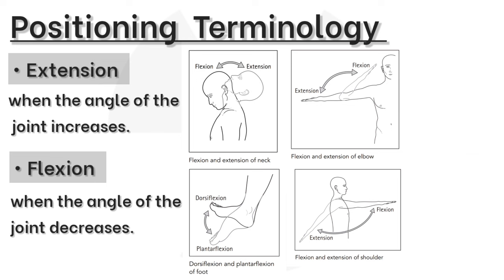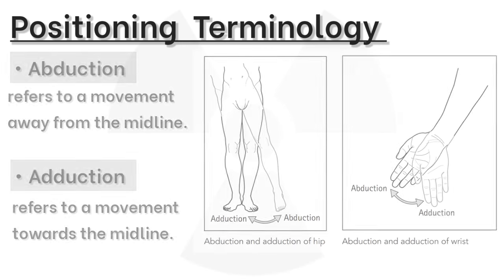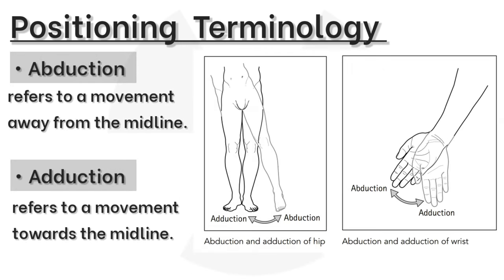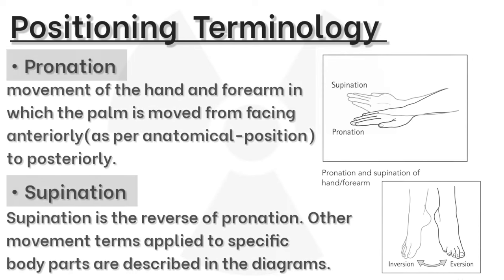Extension: when the angle of the joint increases. Flexion: when the angle of the joint decreases. Abduction: refers to a movement away from the midline. Adduction: refers to a movement towards the midline. Pronation: movement of the hand and forearm in which the palm is moved from facing anteriorly, as per anatomical position, to posteriorly. Supination is the reverse of this. Other movement terms applied to specific body parts are described in the diagrams.